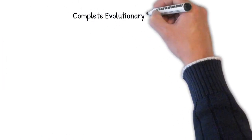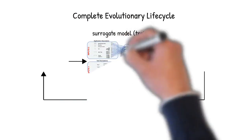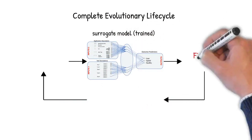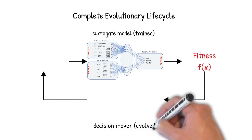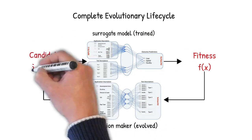The evolutionary life cycle creates surrogate models out of real world data that predicts the fitness of those models. This is then used to make evolutionary decisions in creating the predictive solution. This is our feedback cycle.